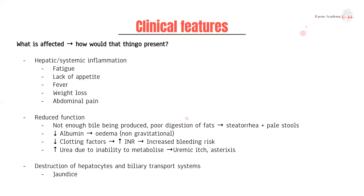You would have reduced clotting factors being produced, so a higher INR or increased bleeding risk. You'd also have higher levels of serum urea because you won't be able to metabolize it well, presenting with symptoms like an itch, asterixis, or flapping tremor. These are not super specific.